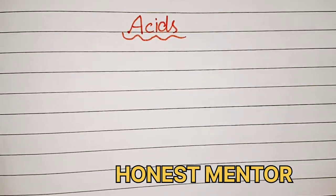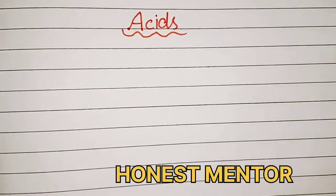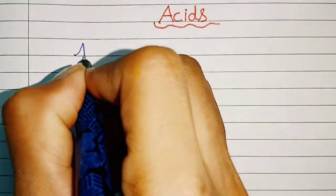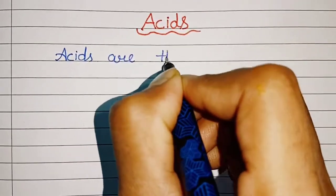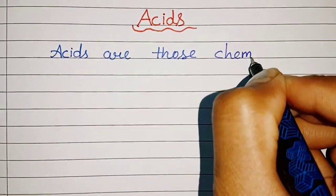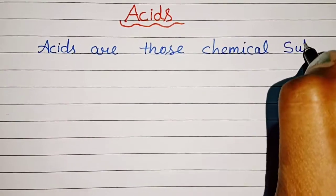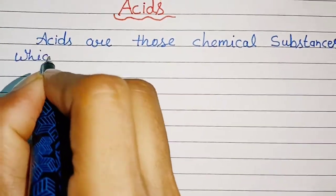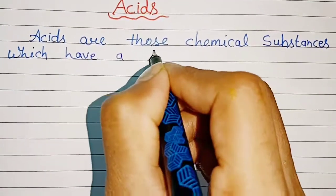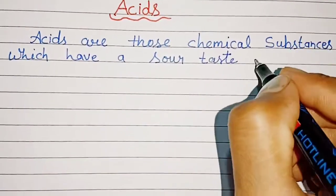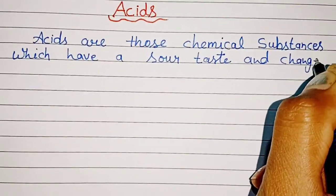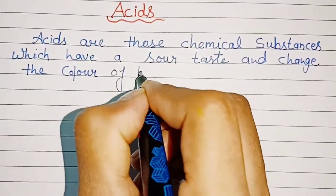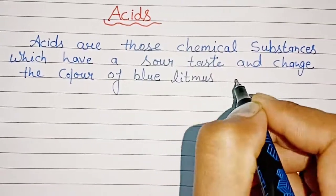Hello everyone, welcome to my channel Honest Mentor. Today we are going to learn about acids. Acids are those chemical substances which have a sour taste and change the colour of blue litmus to red.